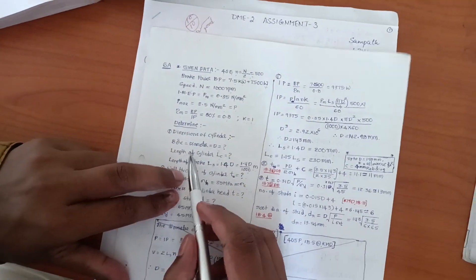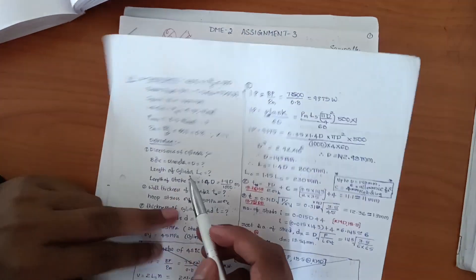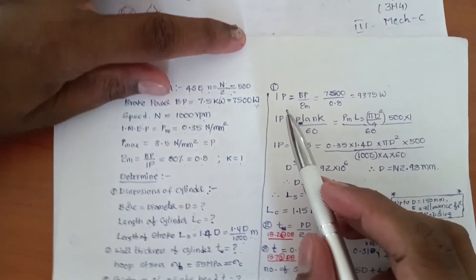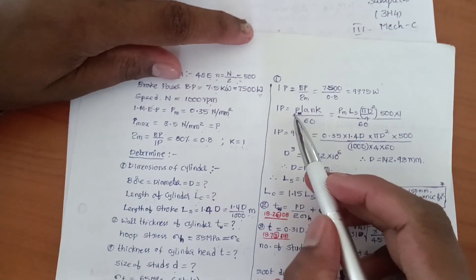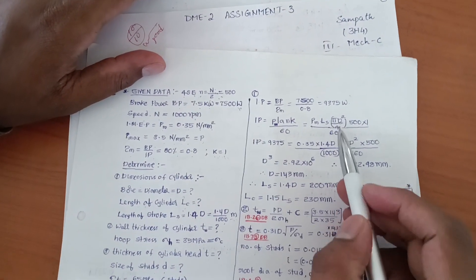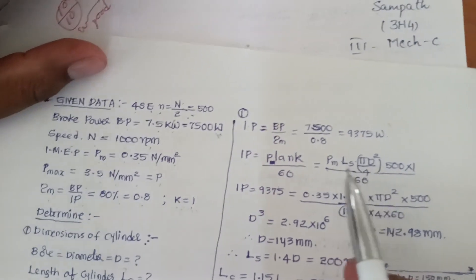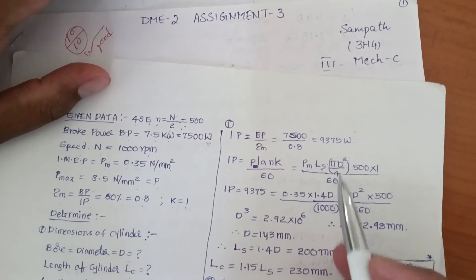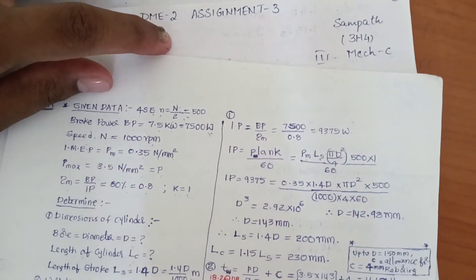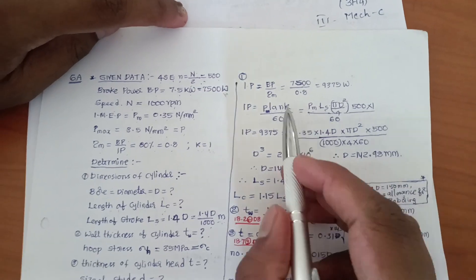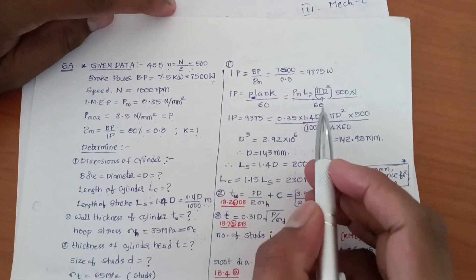First, we need to find the diameter D and stroke length L. For that, we use the indicated power formula: IP equals P × L × A × N × K divided by 60, where A is π D² / 4, L is the stroke length, N is n/2 for 4-stroke. Given N equals 1000 RPM, so n equals 500. K equals 1.